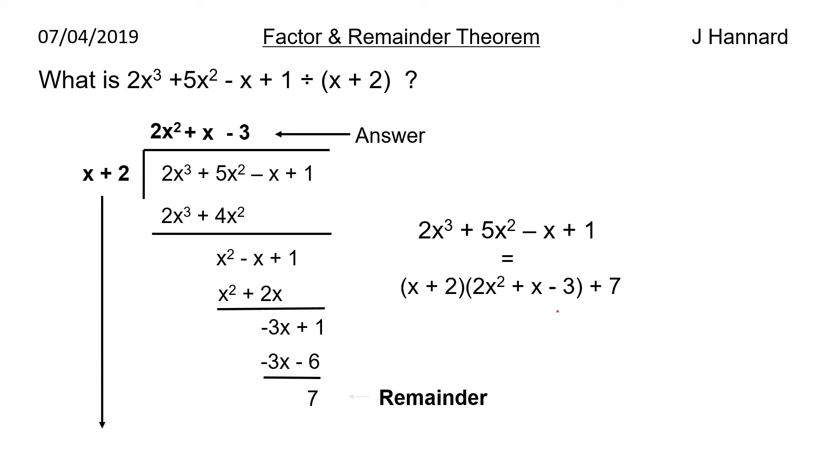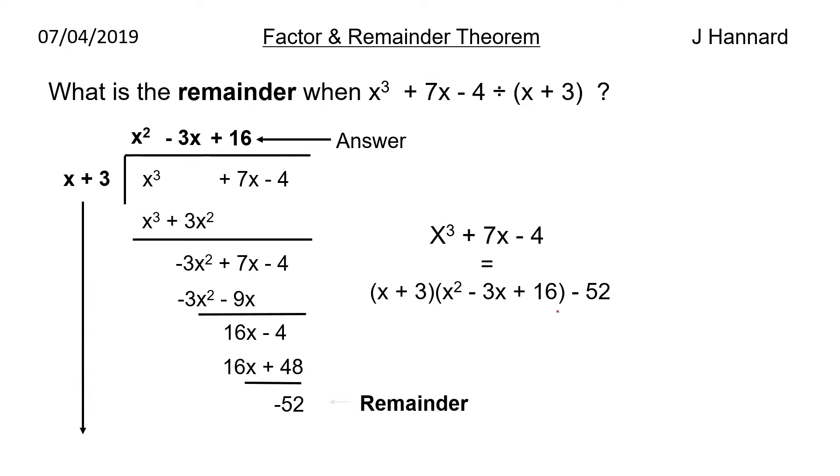So what is 2x cubed plus 5x squared minus x plus 1 divided by x plus 2? Well if you watch the last lesson in the course then you will know that you can work this out and you get a remainder of 7. But what happens if you put f of minus 2 through? Well you also get 7. Is that a coincidence?